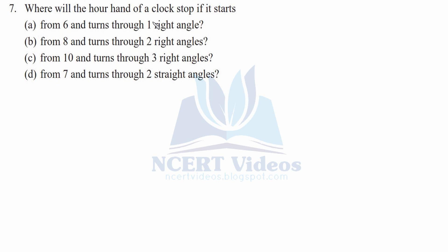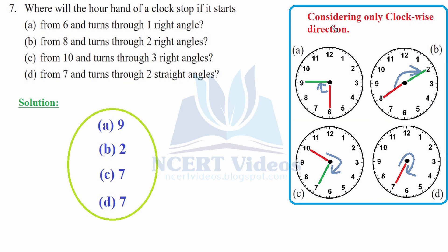Question 7: Where will the hour hand of a clock stop? Only clockwise direction is considered. Part a: from 6, turns through one right angle — move three hours: 7, 8, 9 — stops at 9. Part b: from 8, turns through two right angles — 8 is opposite to 2, so two right angles takes you to 2. The final position is 2.